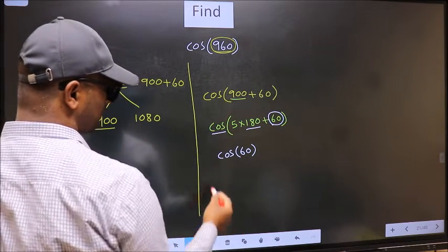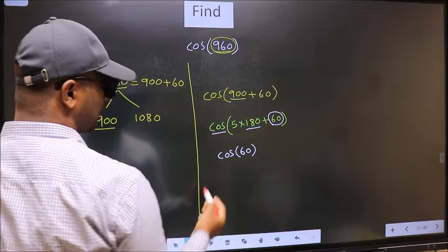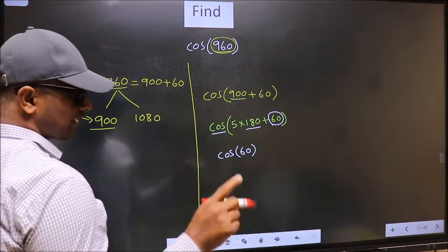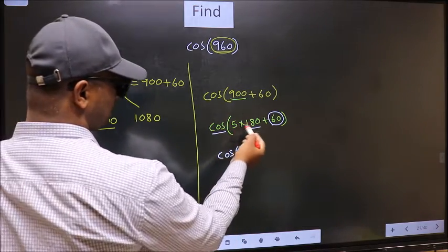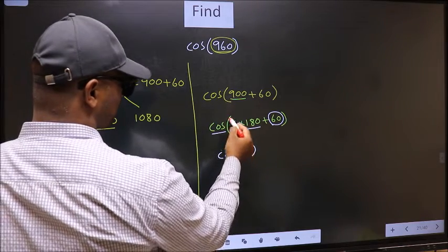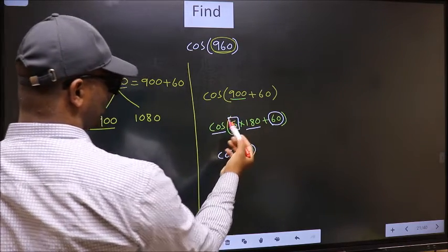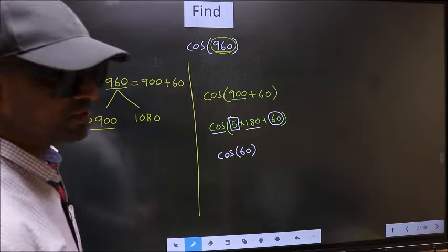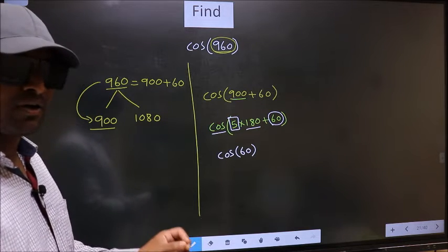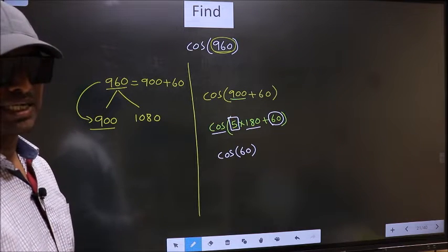Now the question is, will we get here plus or minus? To answer that, we should look at the number before 180, that is 5. And 5 is odd. And all the odd multiples of 180, they lie either in the second or in the third quadrant.